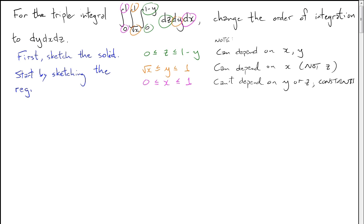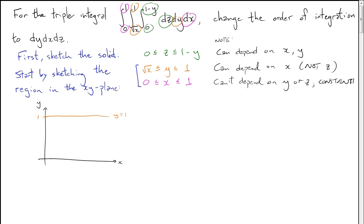Let's start by sketching the region in the xy plane described by these inequalities. y can be as big as 1, so we draw the line y equals 1. y can be as small as root x, so we sketch the curve y equals root x. y sits between those two — bigger than root x but smaller than 1. x goes between 0 and 1, and when x is 1, the two curves meet. That gives us this region.